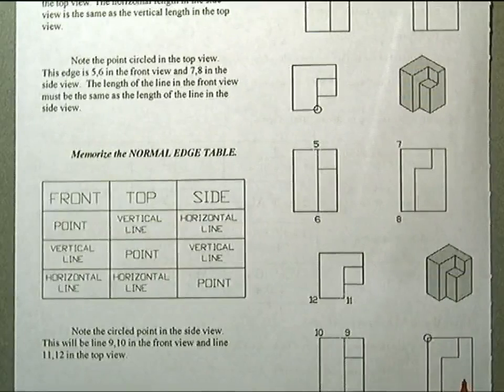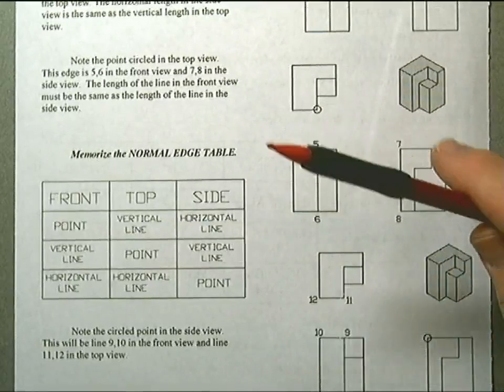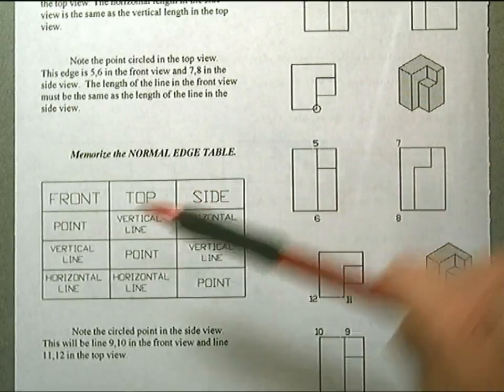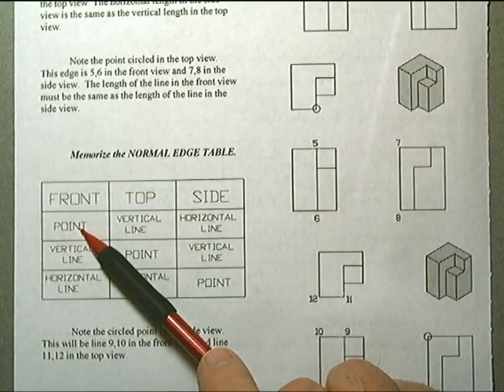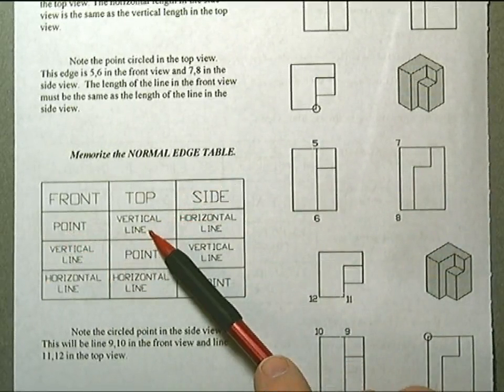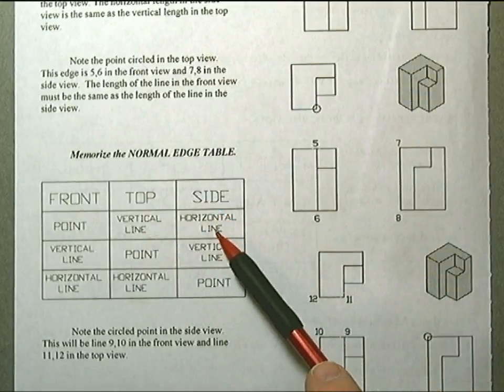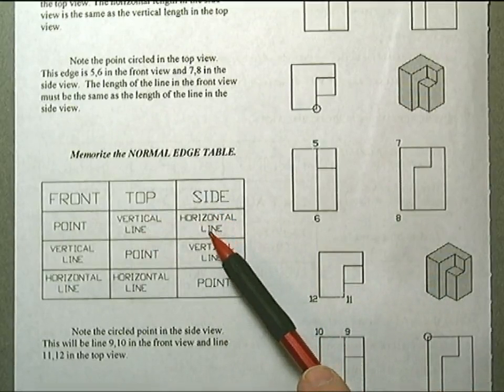Another chart to memorize, and we just kind of throw it at you all at once. If you have a point in the front view, that will create a vertical line in the top and a horizontal line in the side, if they are normal.